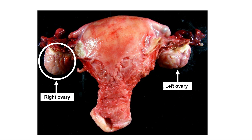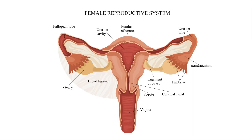This is an anterior view of the uterus with attached fallopian tubes and ovaries. The ovary is a firm almond-shaped organ measuring about 3.5 centimeters long by 2 centimeters wide and 1 centimeter thick. It's attached to the back of the broad ligament by the mesovarium, through which blood vessels pass to enter the hilum. It is attached to the pelvic wall by the suspensory ligament and to the uterus by the ovarian ligament.